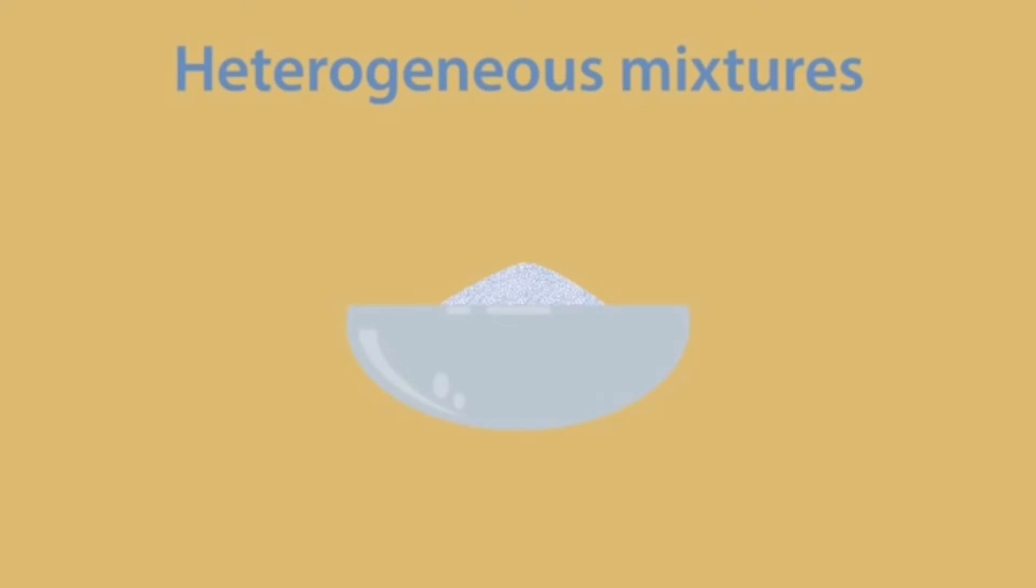If we have a mixture of sulfur and iron filings, we can easily separate this mixture with a magnet. The magnet will remove all the iron filings, leaving behind the yellow sulfur powder.